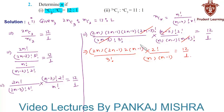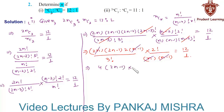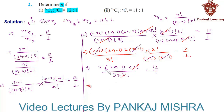Again we can cancel (n minus 1) from numerator and denominator, and also cancel n. So we are left with 2 into 2, that is 4, into (2n minus 1) into 2 factorial over 3 factorial, which can be written as 3 into 2 factorial, is equal to 12 upon 1. Here we can cancel 2 factorial from numerator and denominator.